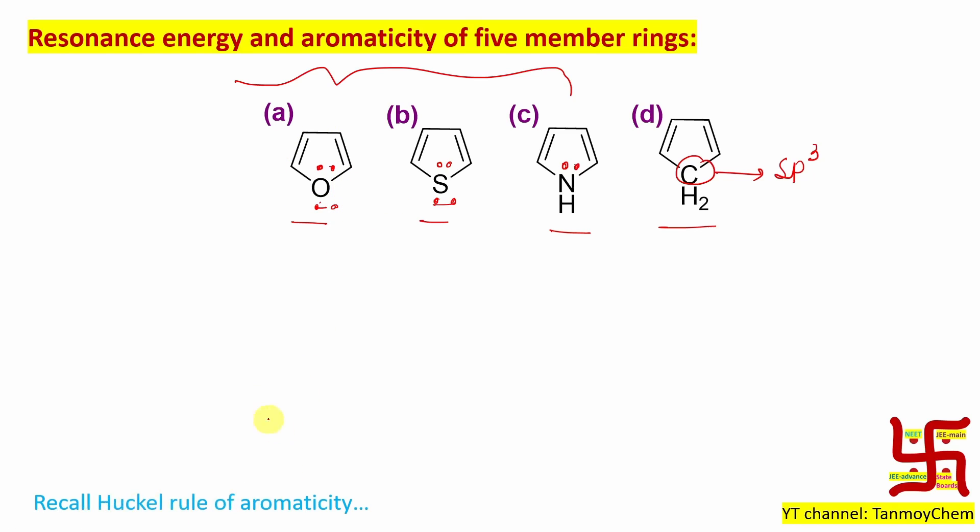If you recall the Huckel rule of aromaticity: first, compound must be cyclic; second, compound must be planar; third, compound must be conjugated, meaning every atom should have a p orbital.